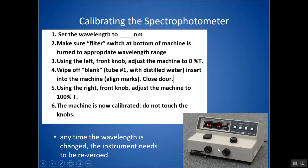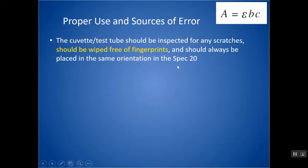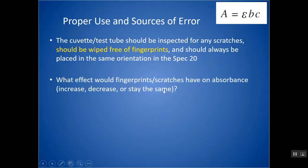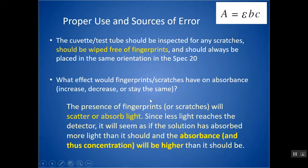Don't adjust the knobs any other time unless you're changing the wavelength. Any time you change the wavelength, the machine needs to be recalibrated or re-zeroed. Proper use and sources of error: the AP loves to ask about sources of error. Your cuvette or test tube should always be inspected for scratches, wiped free of fingerprints, and always placed in the same orientation. Fingerprints or scratches will scatter or absorb light, so less light actually reaches the detector — it will seem as if the solution absorbed more light than it should, and the absorbance and thus the calculated concentration would be higher than it should be.